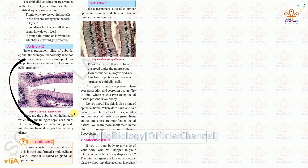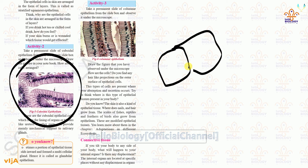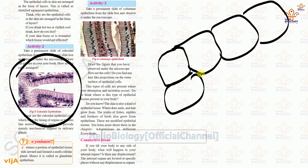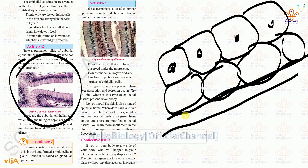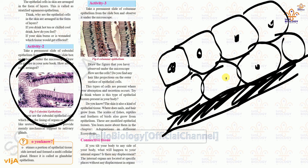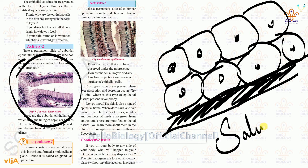Cuboidal epithelium tissue — you can see cubes are arranged here with a very big nucleus and a single basement membrane. These are the cuboidal epithelium tissues. Where are they present? In salivary glands — the saliva you get every day, you need to thank these cells for that.